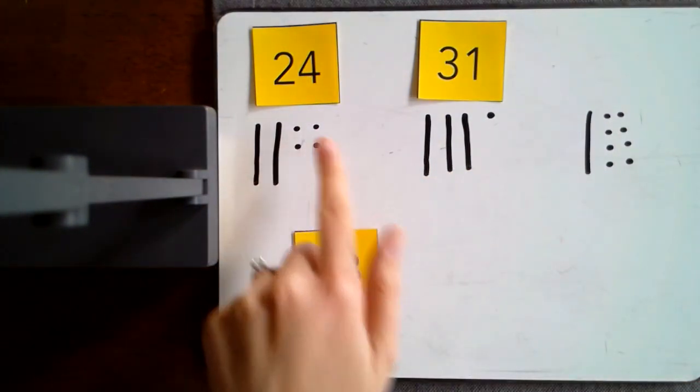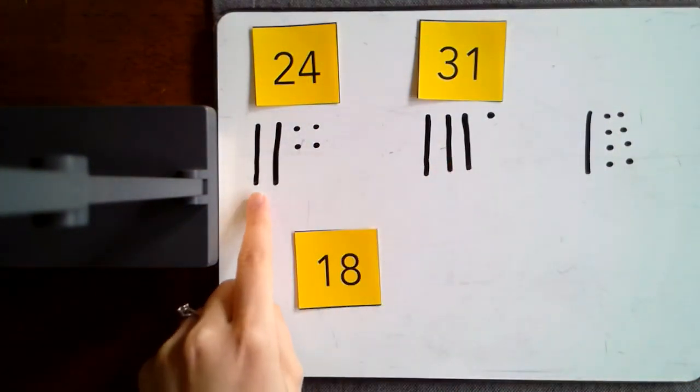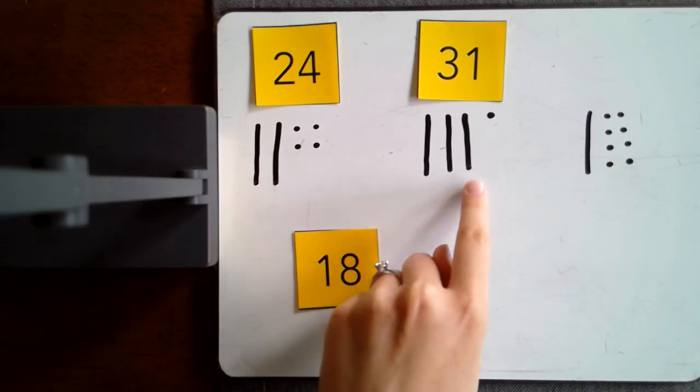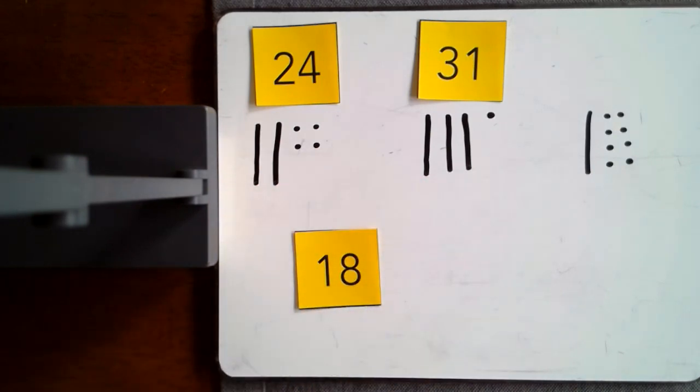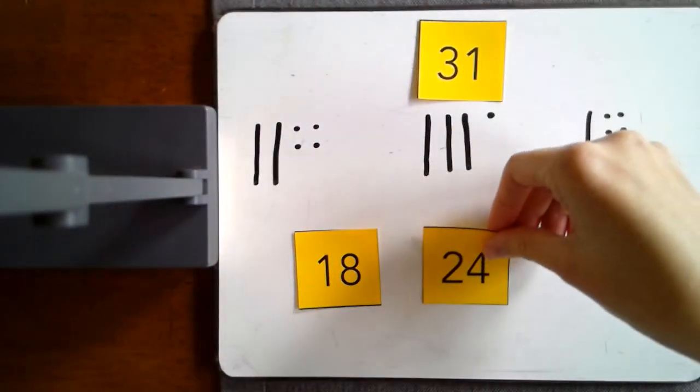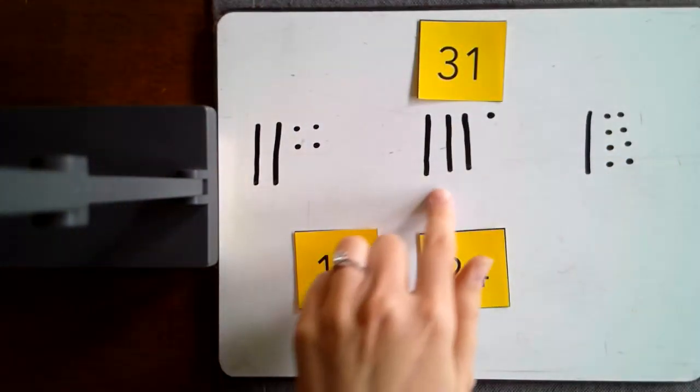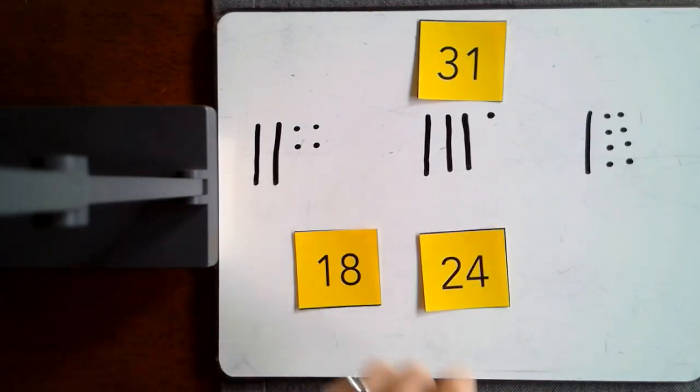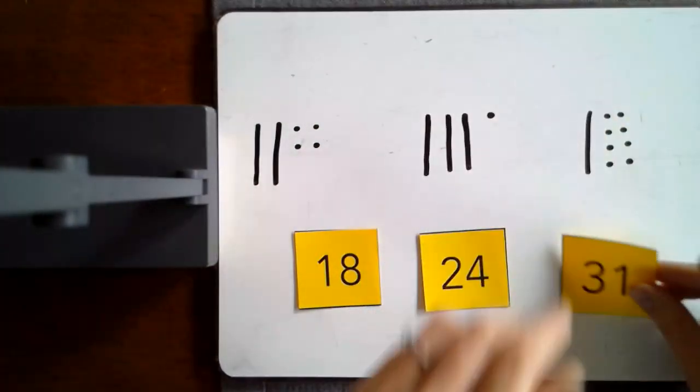Now let me take a look at 24 and 31. I have two tens, three tens. Well the next smallest one would be 24 with two tens. And then with 31 we have three tens. So 31 would be the greatest.